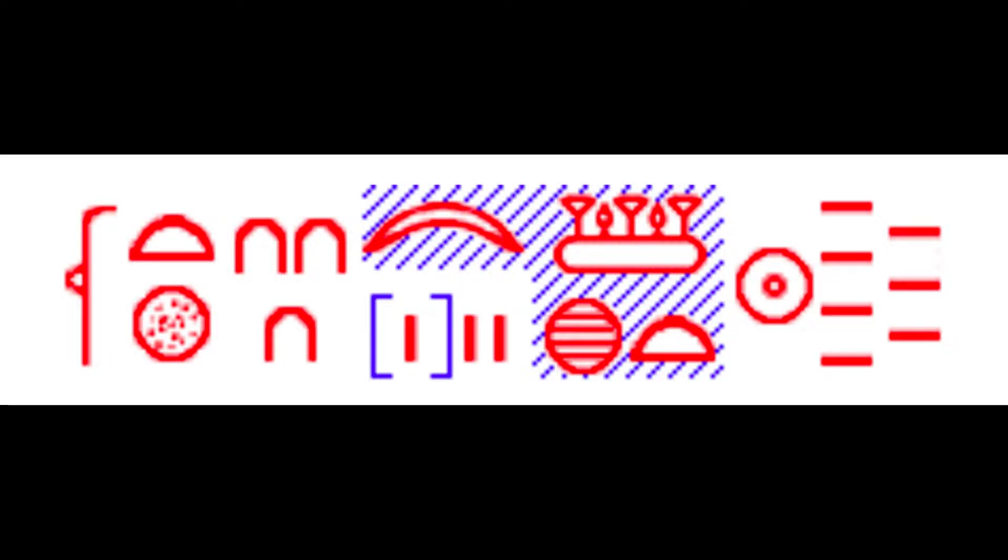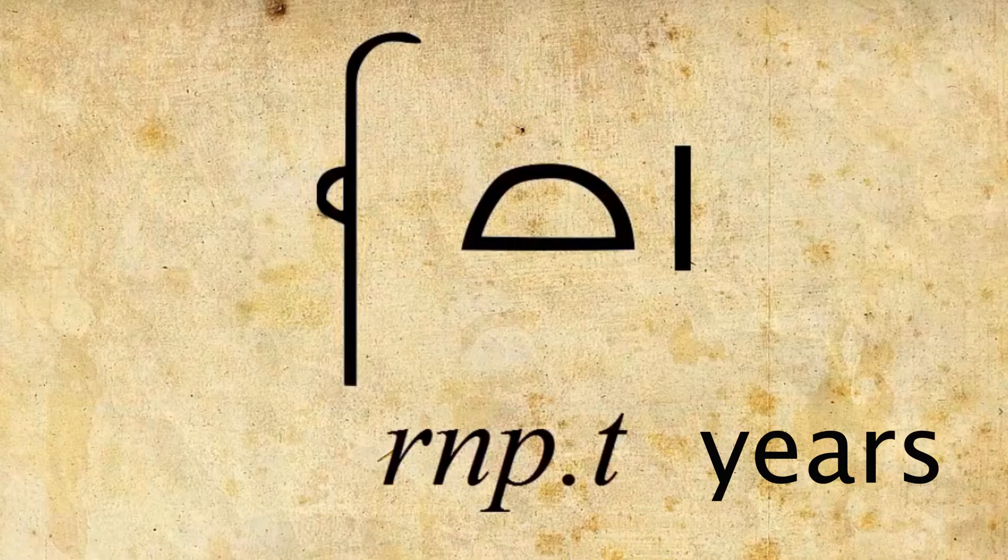If you have seen episode number two of Sinuhe, you will notice that the date is represented this way. It reads: renewal year 13, month three of the flood — meaning the Ahet — day seven. With this information you should easily recognize and read a date inscribed on a monument or a stele.